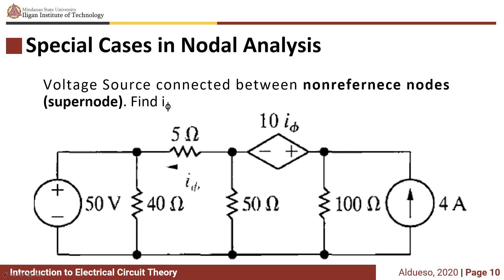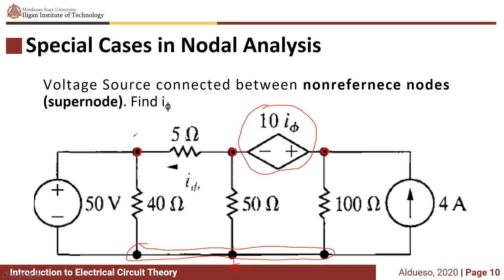Another special case in node analysis is when a voltage source is connected between two non-reference nodes. The voltage source can either be a dependent or independent voltage source. For this example, we have a dependent voltage source connected between two non-reference nodes. The bottom node is our reference node. We label the nodes as v1, v2, and v3. When a voltage source is connected between two non-reference nodes, it is called a supernode.